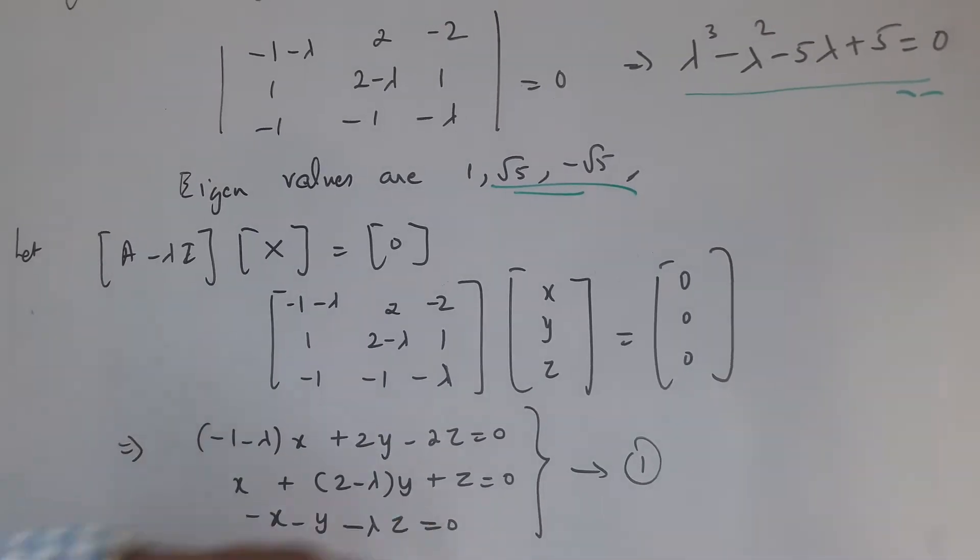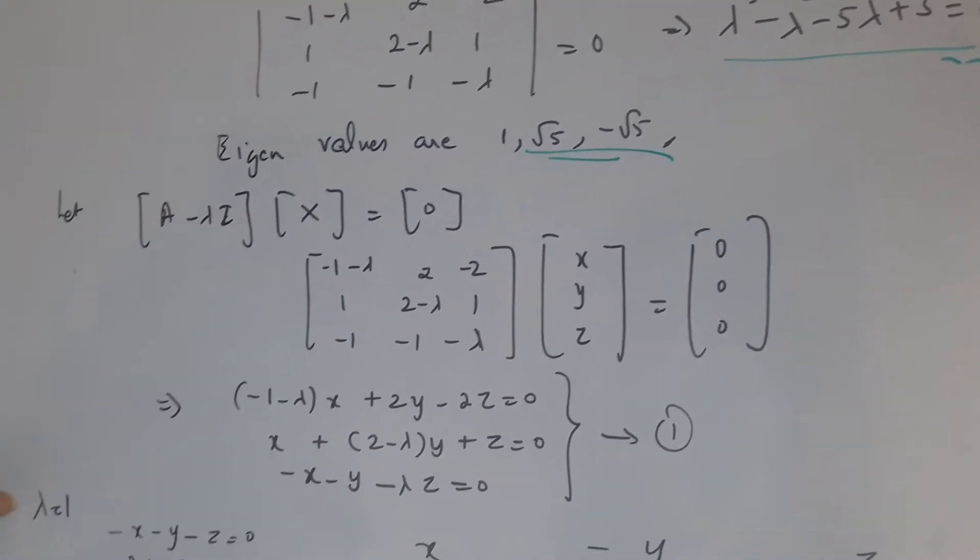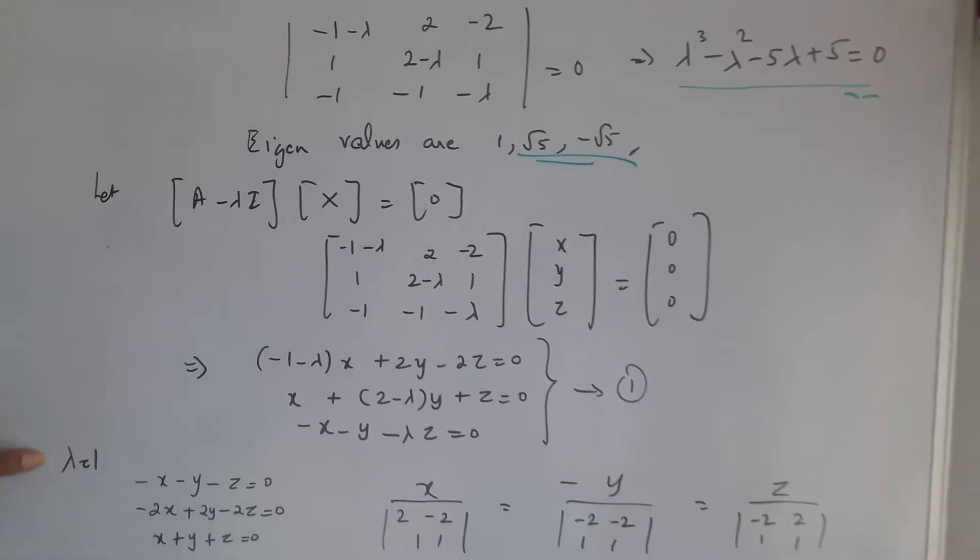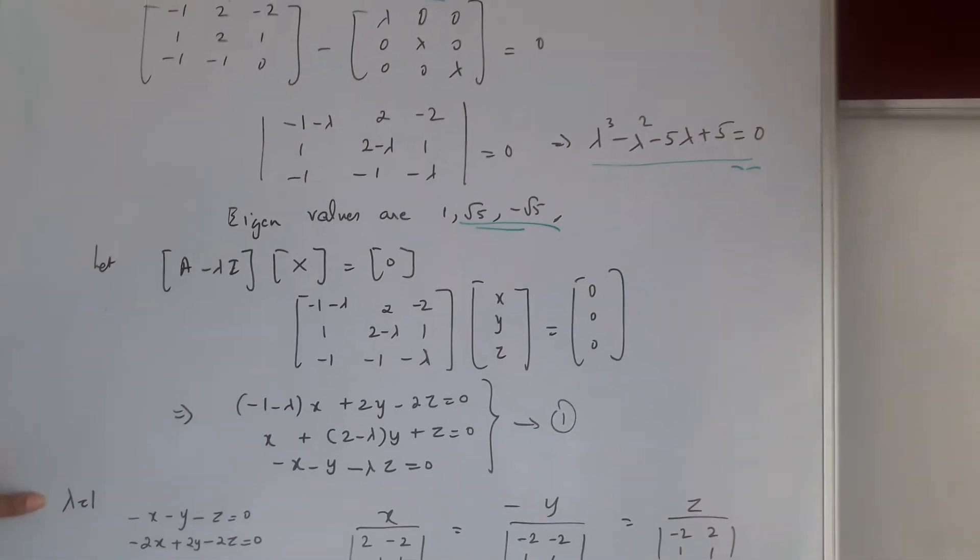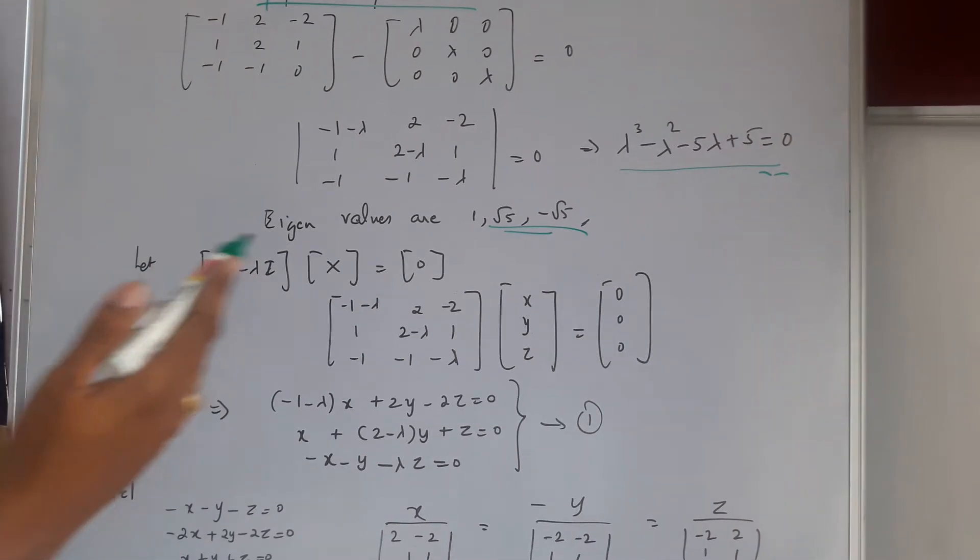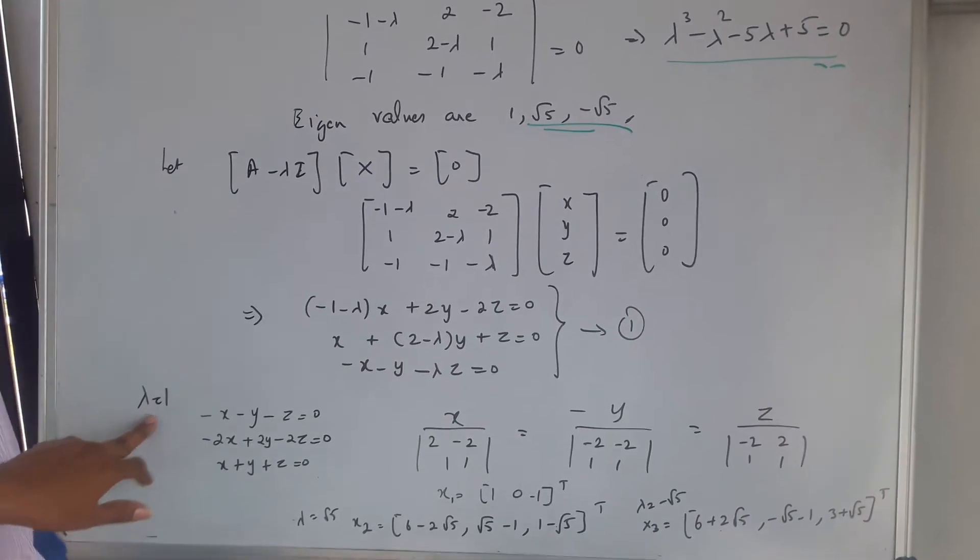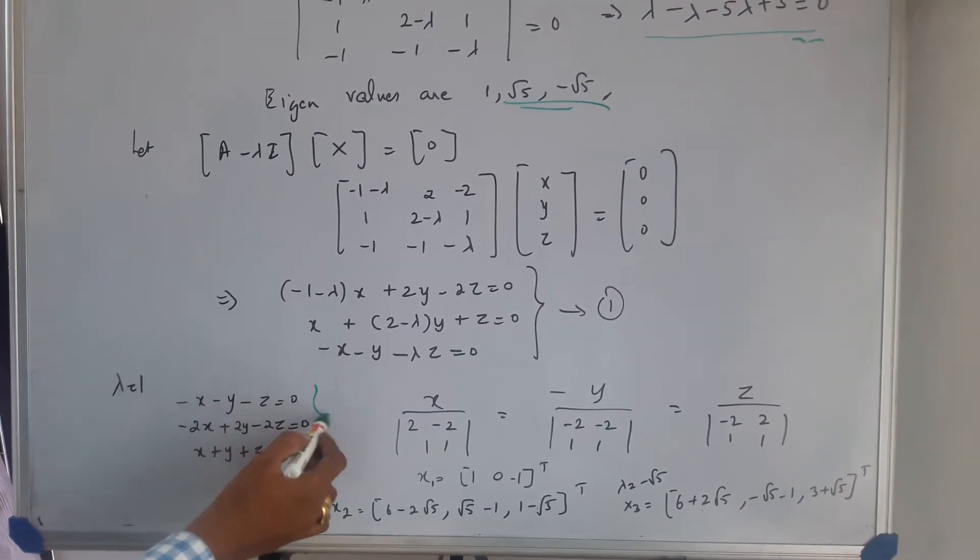Now after finding this I get 3 equations. If I substitute the eigenvalues which I already found—1, root 5, and minus root 5—when I put lambda value as 1, I get the first 3 equations.